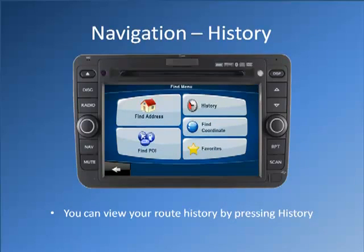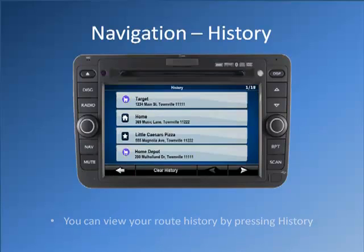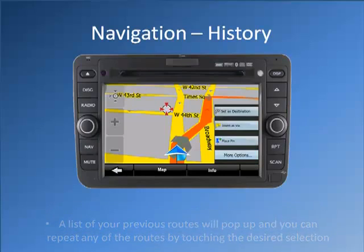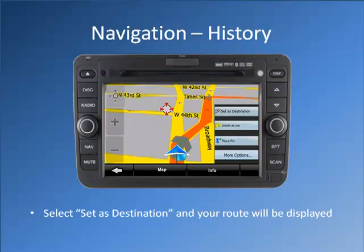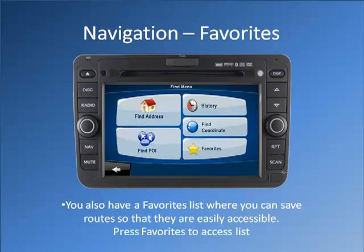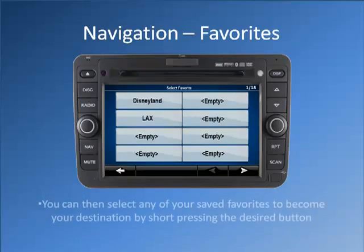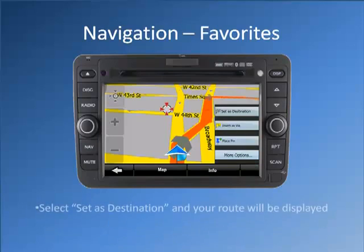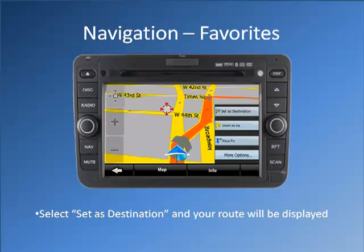You can view your route history by pressing History. A list of your previous routes will pop up and you can repeat any of the routes by touching the desired selection. Select Set as Destination and your route will be displayed. You also have a favorites list where you can save routes so that they are easily accessible. Press Favorites to access the list. You can then select any of your saved favorites to become your destination by short pressing the desired button. Select Set as Destination and your route will be displayed.